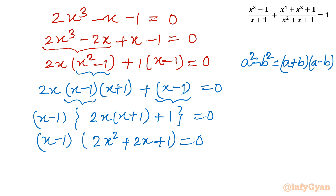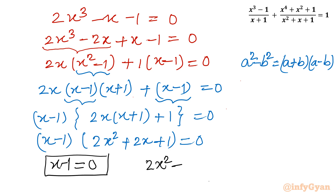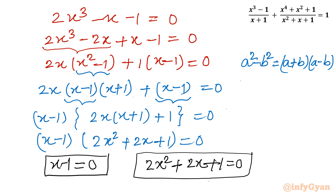Since the product equals zero, either x - 1 = 0, or the quadratic 2x² + 2x + 1 = 0. We will solve both equations. From the first equation we get x = 1 as a solution. We will verify this at the end. Now let us solve the quadratic equation 2x² + 2x + 1 = 0.